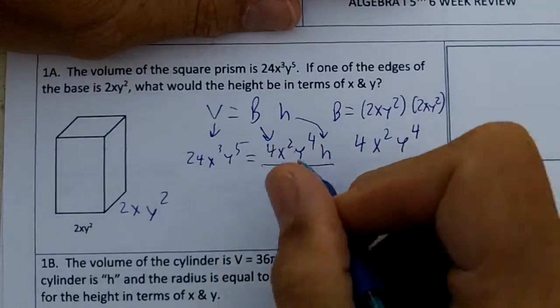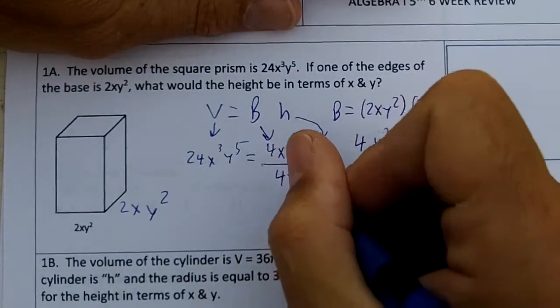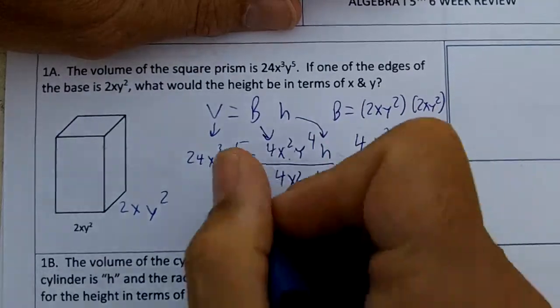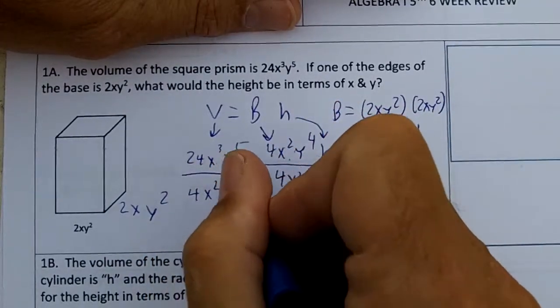To find the height, we're going to divide by the area of the base, or 4x²y⁴. We'll divide this by 4x²y⁴.